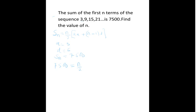So this formula will become 7,500 equals n over 2 multiplied by 2a, that is 2 times 3, plus n minus 1, and then we multiply by the common difference, that is 6.